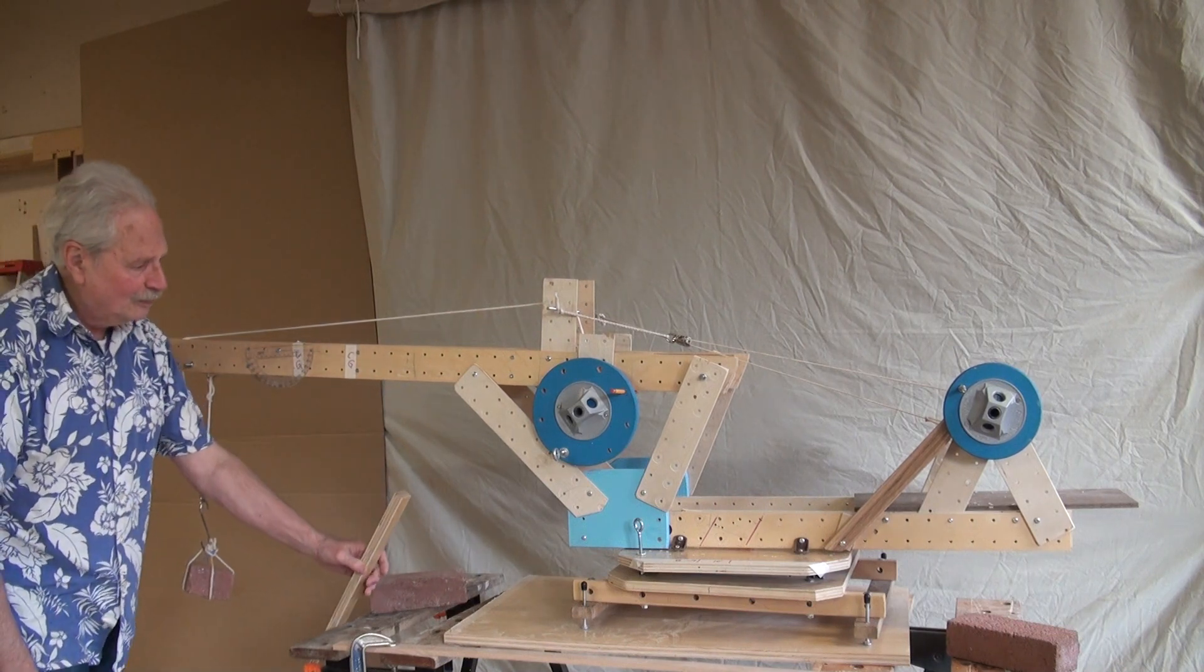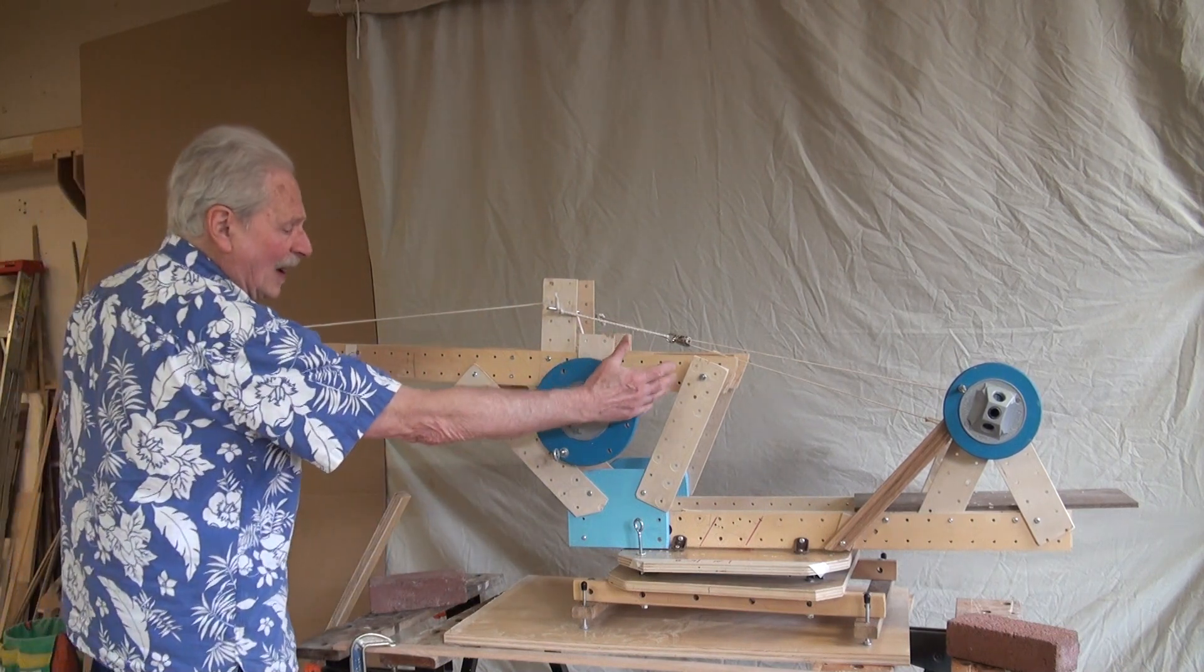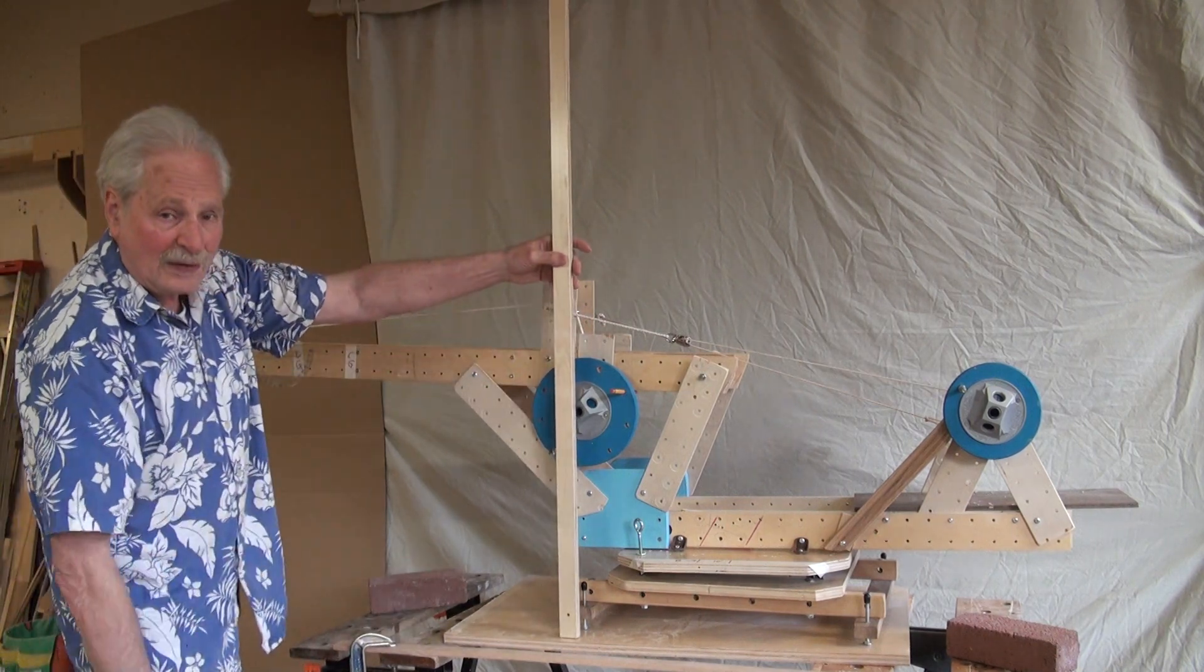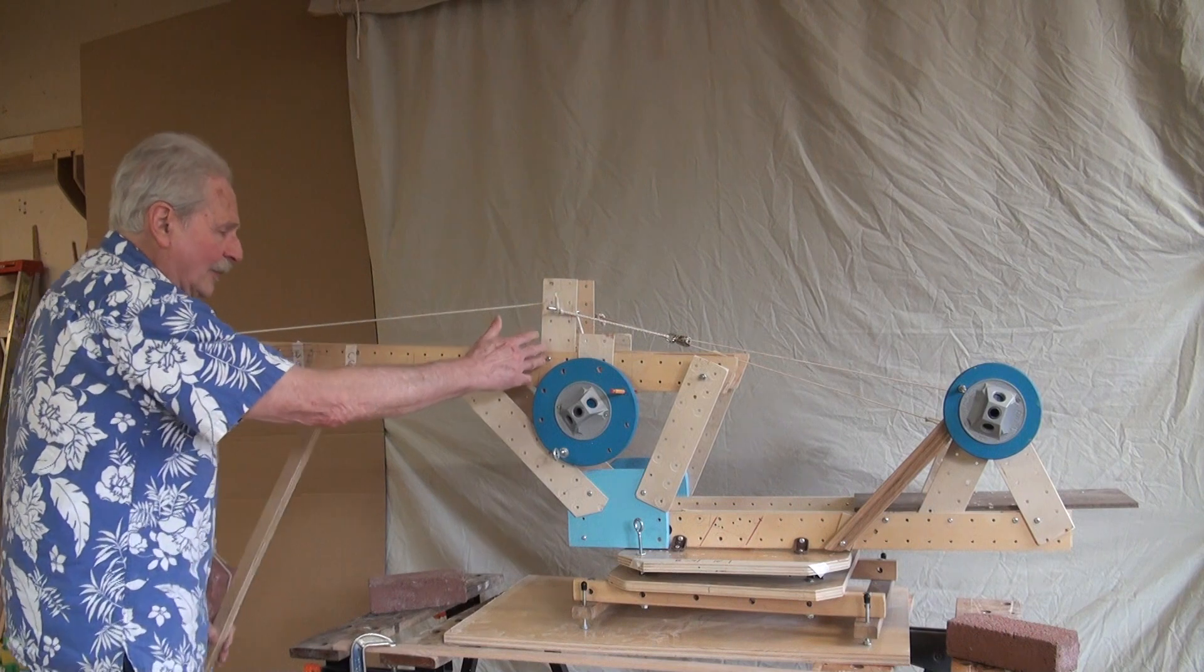And what about the boom? The whole boom weighs about 5 pounds. But we're only looking at everything on this side of the pivot point. So that's about 3 pounds.